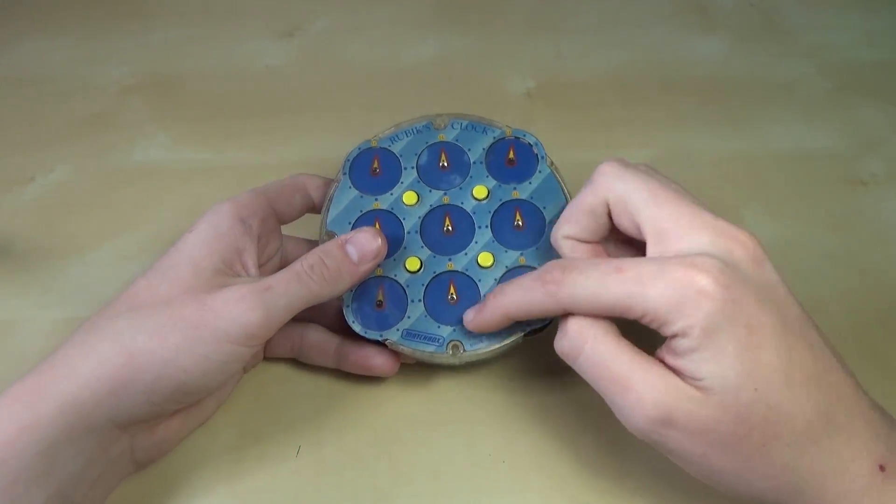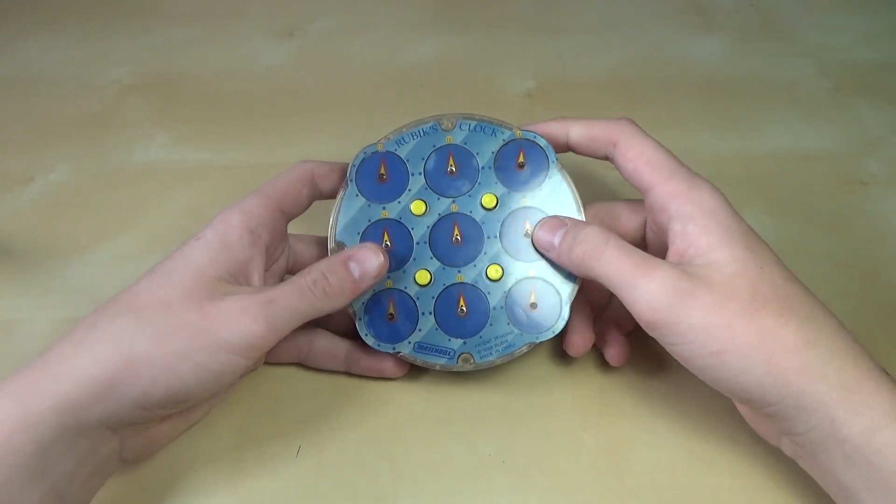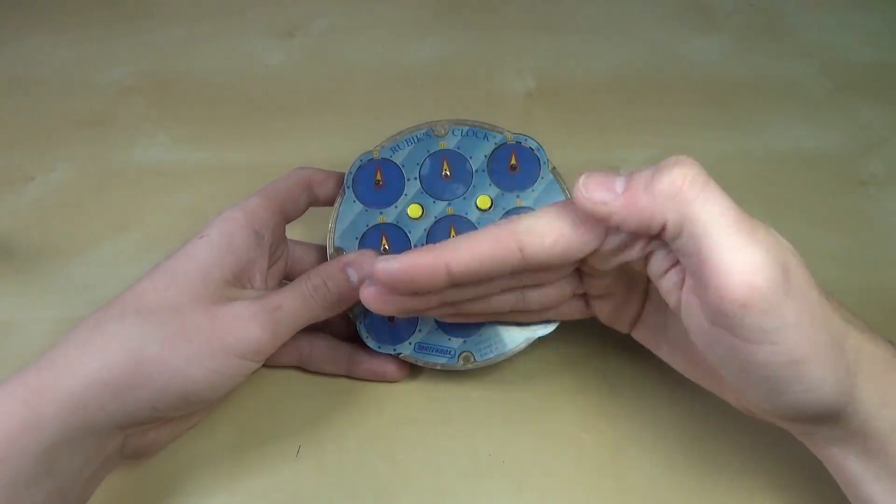Just make sure that when you finish the first cross, you make them all facing up. Because otherwise, these five pieces will be facing the wrong way.